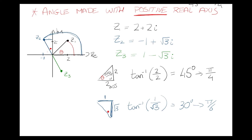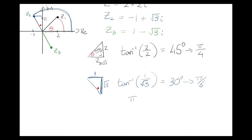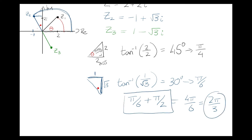Pi over 6 is not our argument for z2 — that's just the small red angle. We need to add it to the 90-degree section, so the argument is pi over 6 plus pi over 2. That's pi over 6 plus 3 pi over 6, which equals 4 pi over 6, simplifying to 2 pi over 3. That's 120 degrees — you can verify this on your calculator.